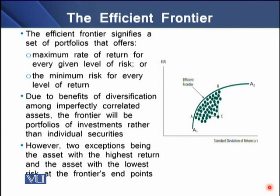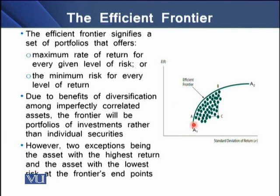Due to the benefits of diversification among imperfectly correlated assets, the frontier will consist of portfolios of investments rather than individual securities. We have portfolio F and portfolio B alongside this efficient frontier. At the ends of the efficient frontier, we can see only standalone asset portfolios. At the maximum end, we have a portfolio containing only asset two, offering the highest expected return, and at the other end, asset one, offering the least riskiness.